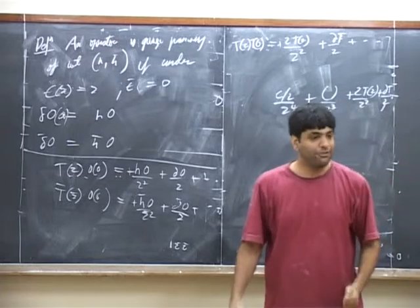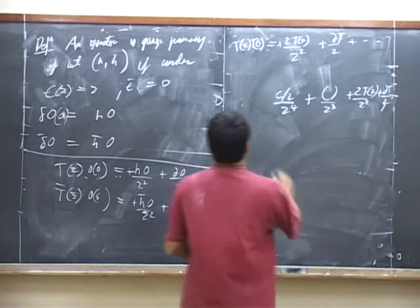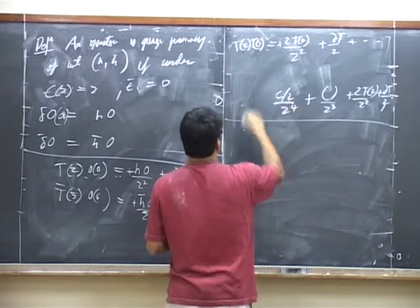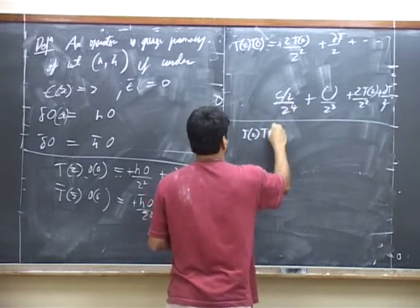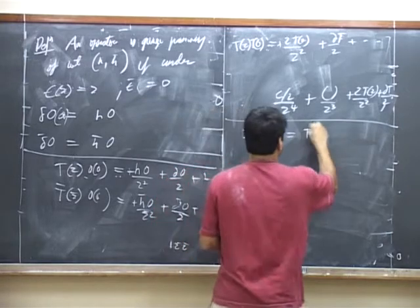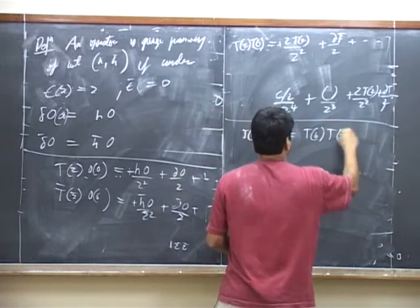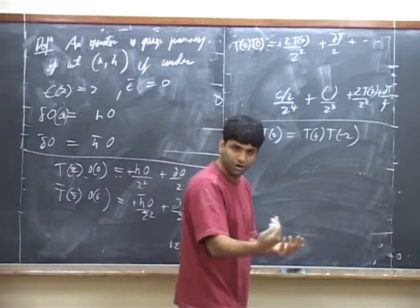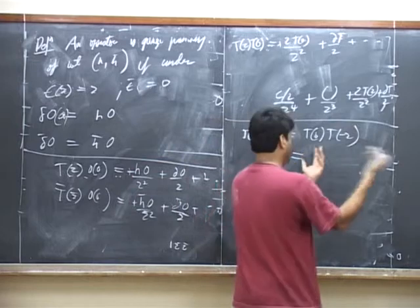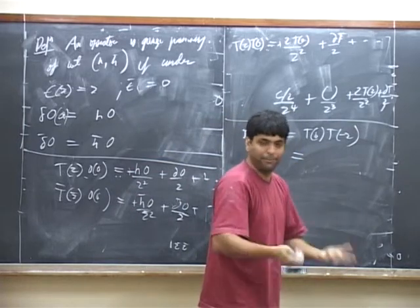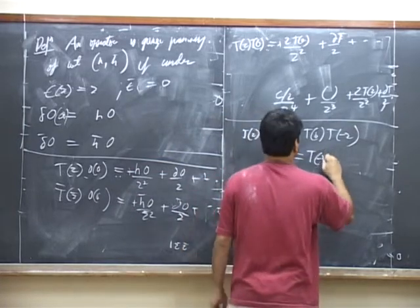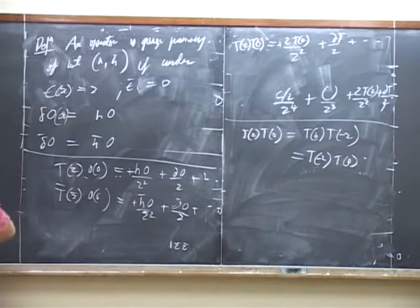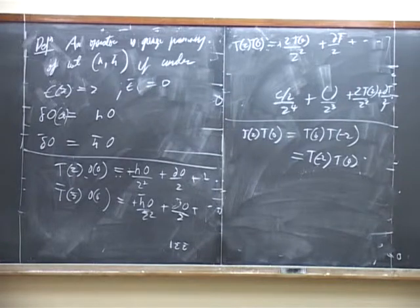So putting these two statements together, what are we concluding? We've concluded that this expression, T(z)T(0), must be equal to T(0)T(-z). That's translation invariant. Shift to the origin, which inside the path integral is the same thing as T(-z)T(0).